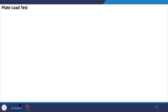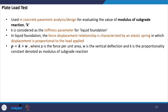Now we talk about the last common test used typically in pavement design — the plate load test. The plate load test is used in concrete pavement analysis and design to evaluate the modulus of subgrade reaction K. K is a stiffness parameter for the liquid foundation — also called the Winkler foundation — which we assume in concrete pavement design.